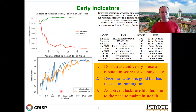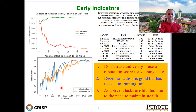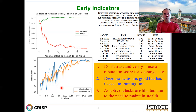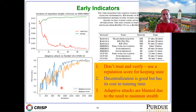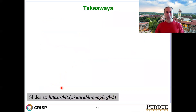Even with adaptive attacks — which are aware of your defense technique — we find that this defense is able to thwart them. The fundamental reason is that adaptive attacks also need to maintain stealthiness, and that requirement blunts their effectiveness.